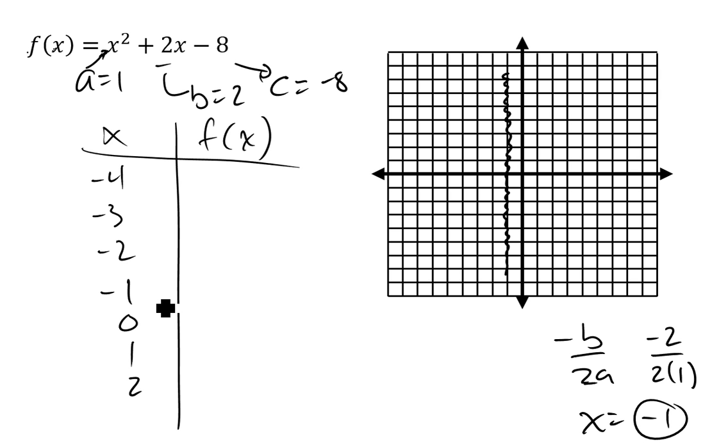When I plug negative 1 into this function, I get negative 1 squared plus 2 times negative 1 minus 8, which looks like, let's see, that would be negative 8 minus 2 is negative 10 plus 1 is negative 9. So this gives me a negative 9. This equals negative 9.